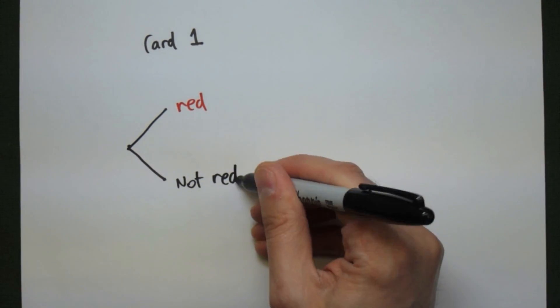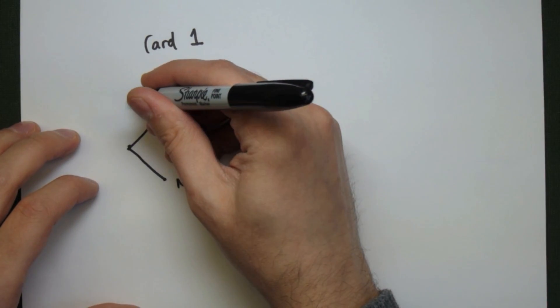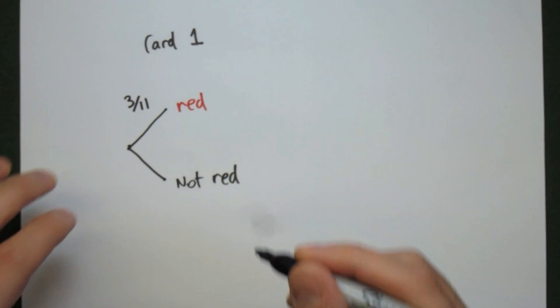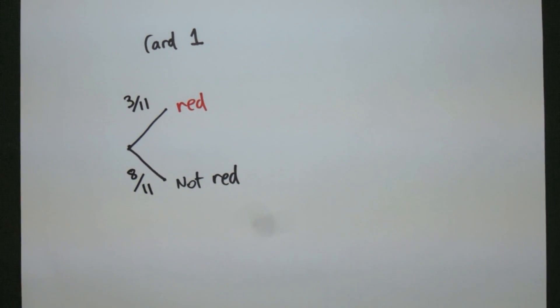You could also have split this up into more branches for the greens and the browns and the dreams, but it's not going to change how the answer works out, so this will be simpler. Now we need the probabilities. The probability it's red: there are three out of the eleven cards that are red, and eight that aren't.